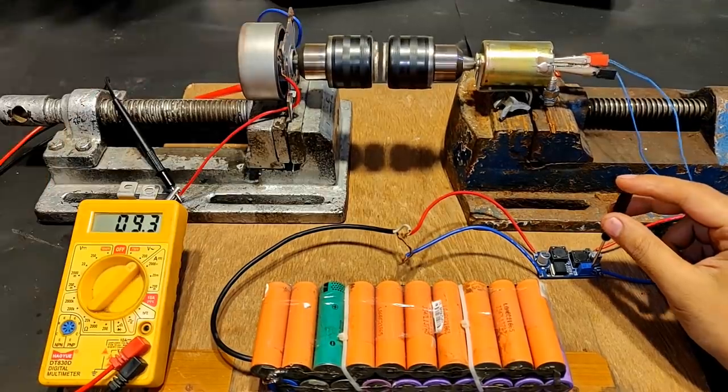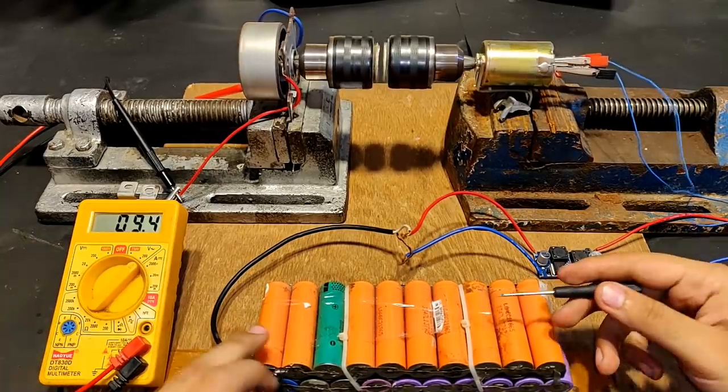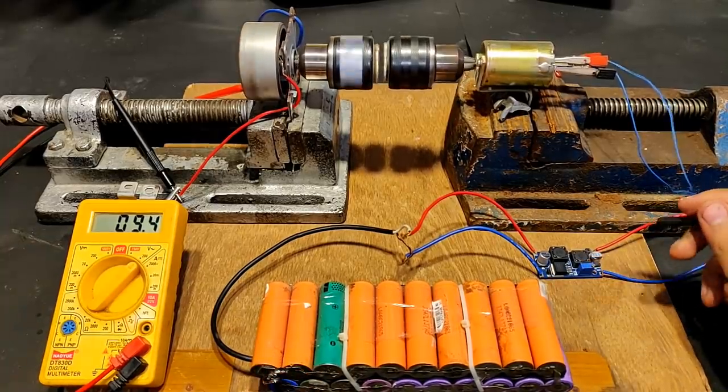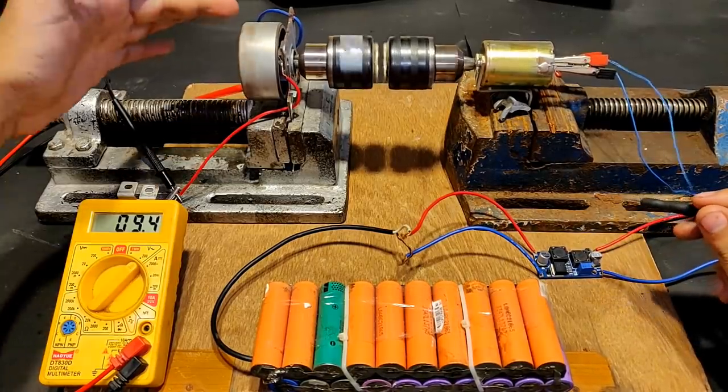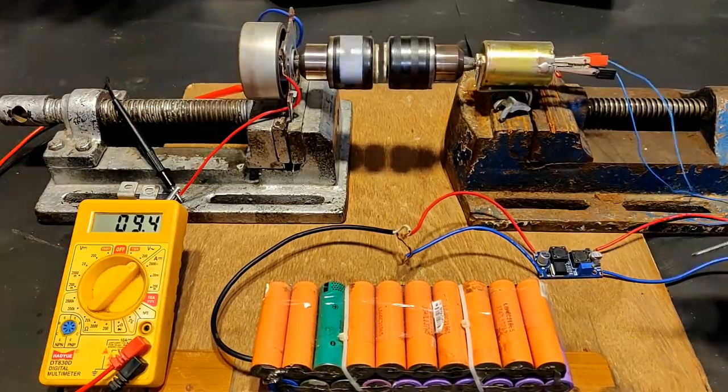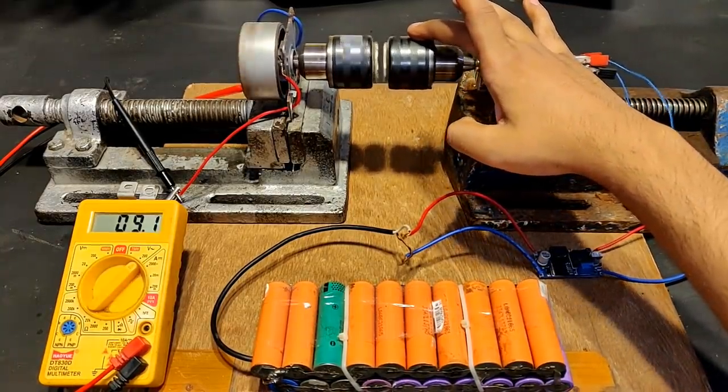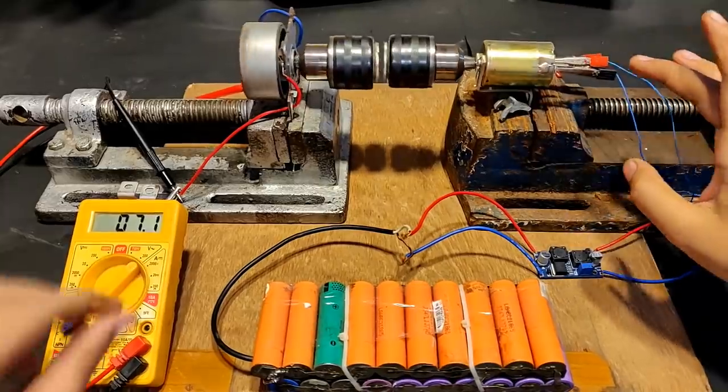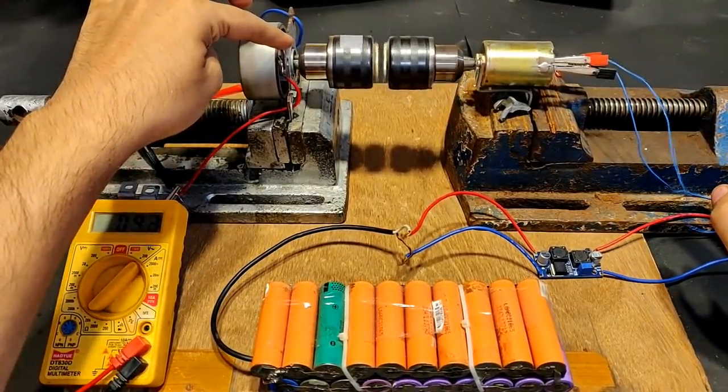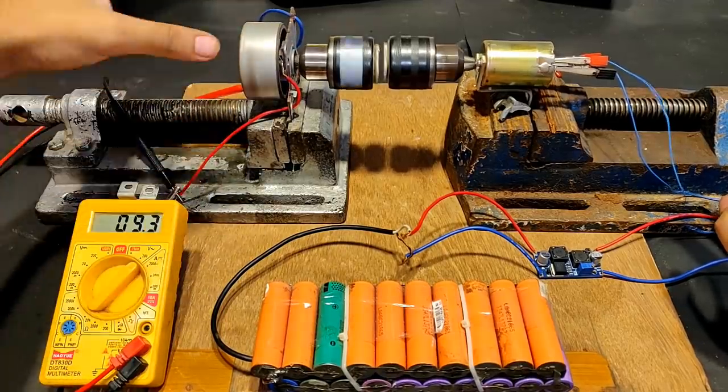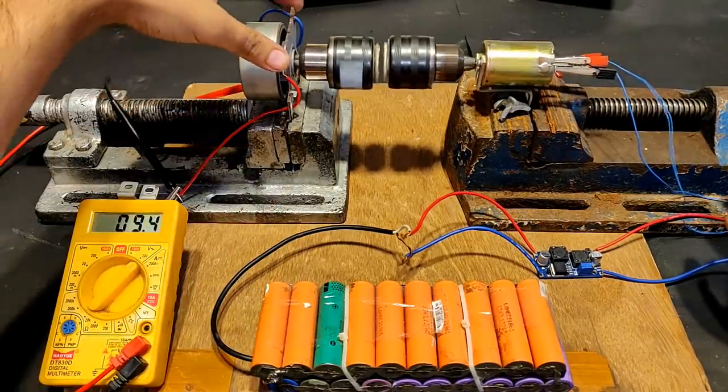It's working pretty good. It is generating around 9.4 volts. 3.7 volts is being converted to around 7 or 8 volts with this converter, which is finally converted with this alternator to 9.4 volts AC.